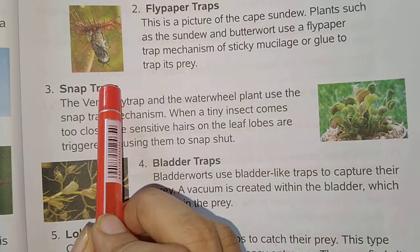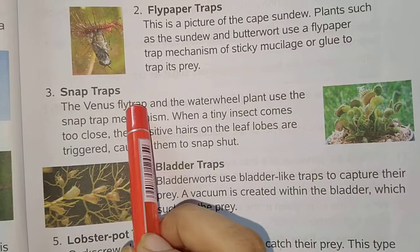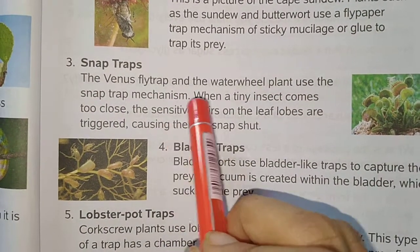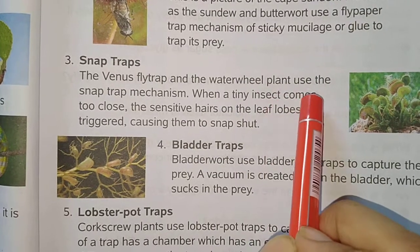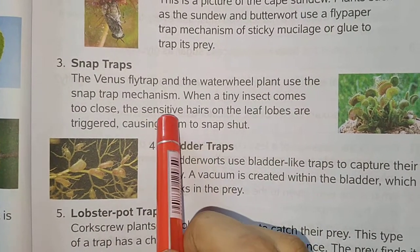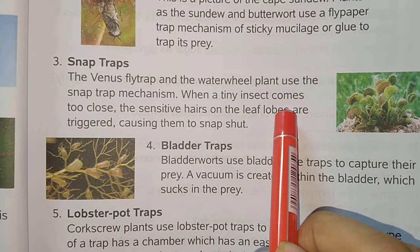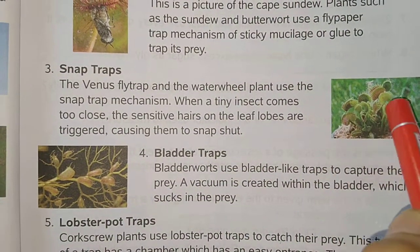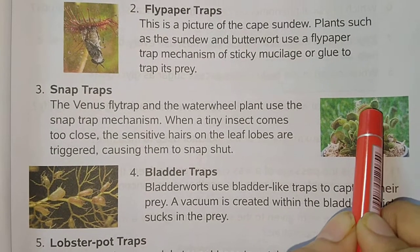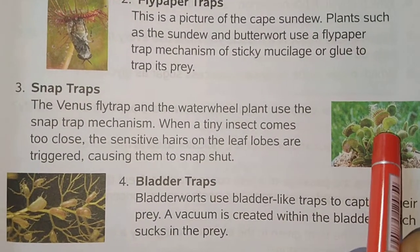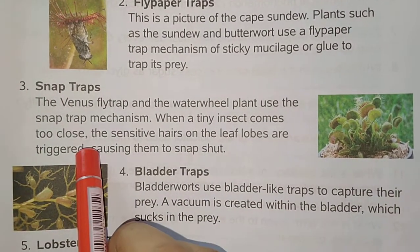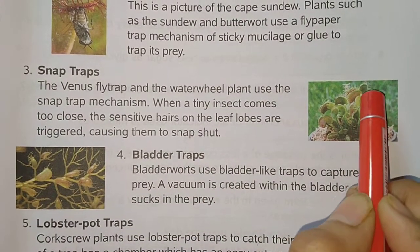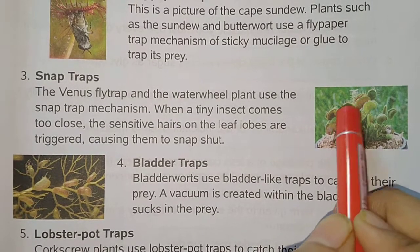Next is the snap trap. Examples include the Venus fly trap and the water wheel plant, which use the snap trap mechanism. When a tiny insect comes to the plant, there are sensitive hairs on the leaf lobes — the plant has divisions on both sides with very sensitive hairs. When triggered, they snap shut. As you can see in the picture, the insect becomes stuck and closed inside.